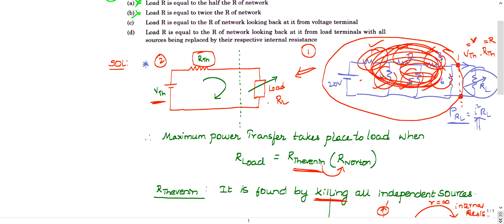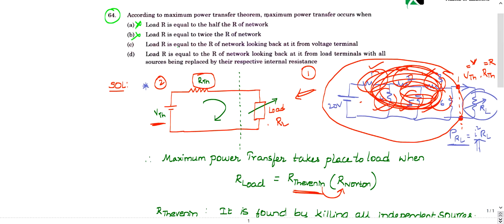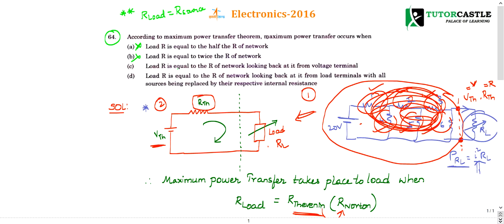So for maximum power transfer, load resistance must equal Thevenin resistance. Now looking at Option C: it says load resistance equals resistance of the network — that part is correct — but it says looking from the voltage terminal. We look from the load terminal, not the voltage terminal, so Option C is not the right choice.